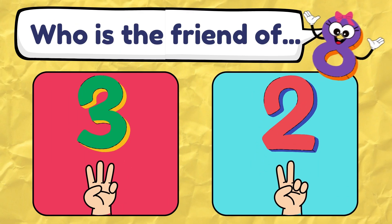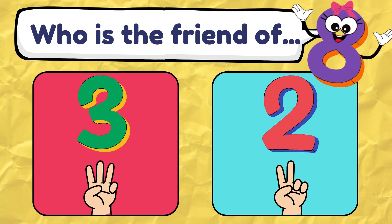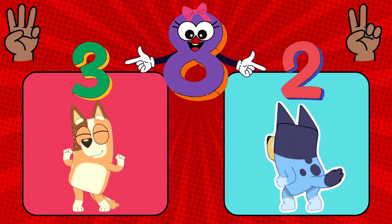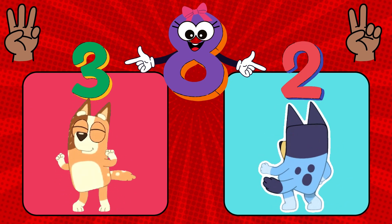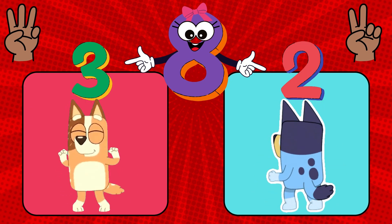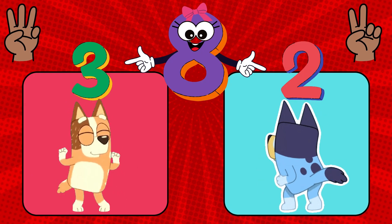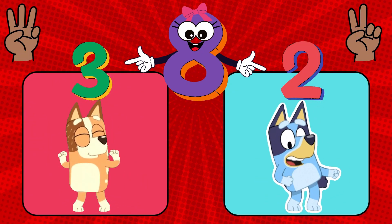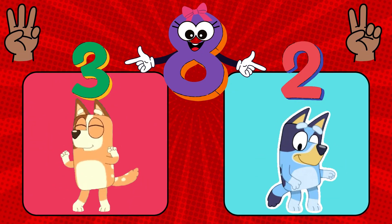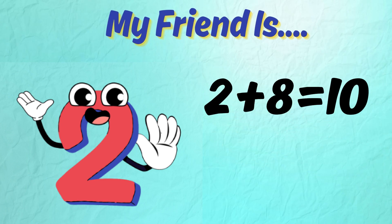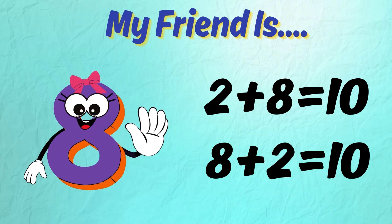Next one. Who is the friend of number 8? Is it 3 or 2? Hold up 8 fingers and see how many are down. Did you figure it out? Do the matching dance! That's it — the friend of 8 is number 2. 2 plus 8 is 10, so 8 plus 2 also equals 10.